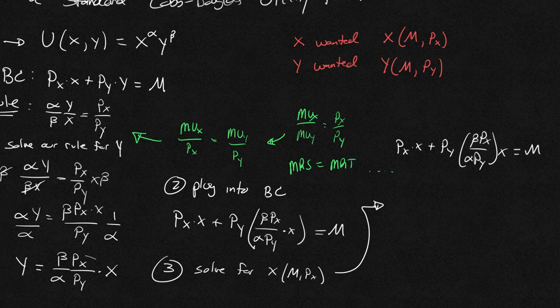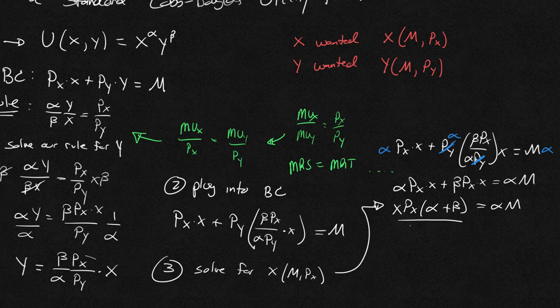Well, the first thing I'm going to do is I'm going to get rid of this py in the denominator. Those are going to cancel. And I want to get rid of that alpha, so I'm going to multiply everything by alpha. So what am I left with? Alpha px times x plus beta px times x equals alpha m. Let's go ahead and factor out this x, px. We're left with alpha plus beta equals alpha m. And then we'll divide both sides by px alpha plus beta.